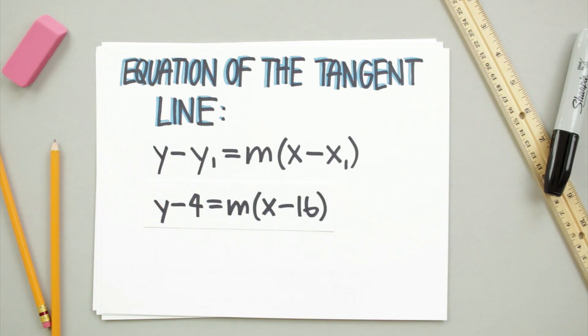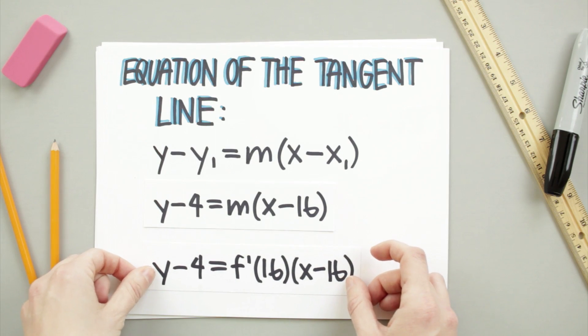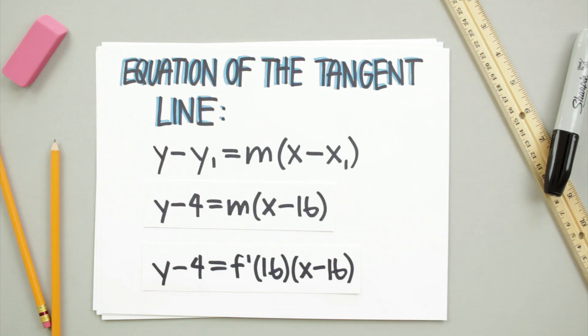But we're using the tangent line to the function at the point 16, 4. And how do you find the slope of the tangent line at a point? You evaluate the derivative of the function at that point. So, the slope of this line is going to be equal to f prime of x1, or in this case, f prime of 16.